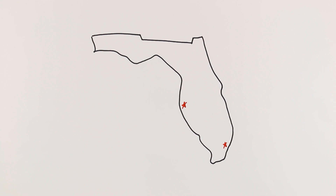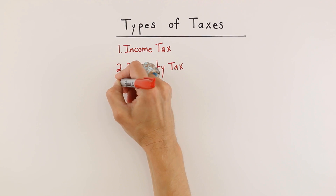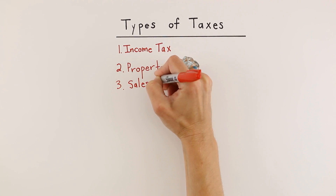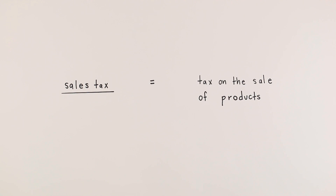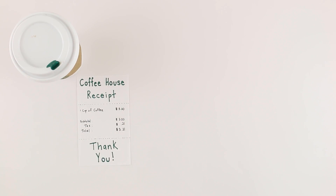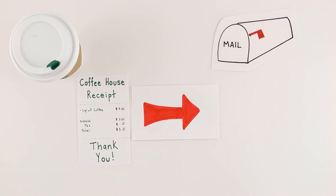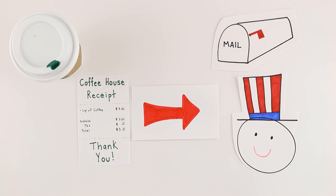Property taxes are the primary source of revenue for local governments. Sales tax is a tax on the sale of products. Sales tax is paid when you buy something, and the business you purchased your goods from sends that money to the government.